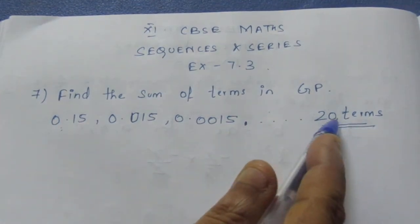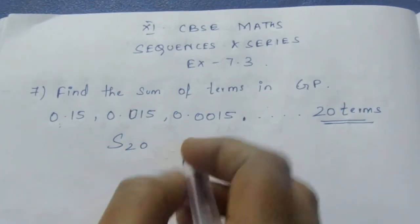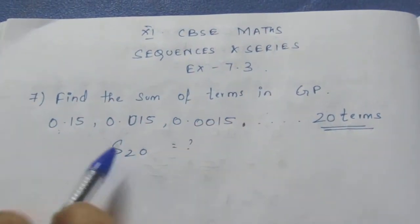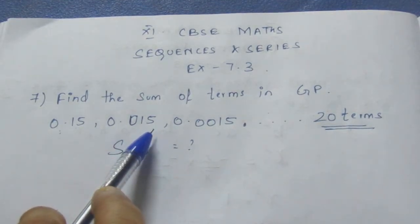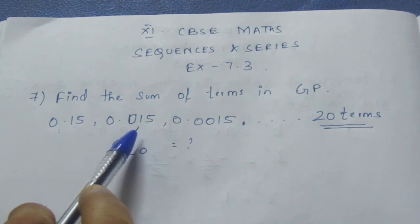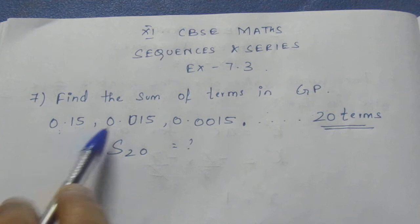Here they have given number of terms to be 20, so we need to find S20. For writing a formula, we want to know which of the two formulas in GP for the sum should be used. It depends on the R value, the common ratio value. First we need to find the common ratio.